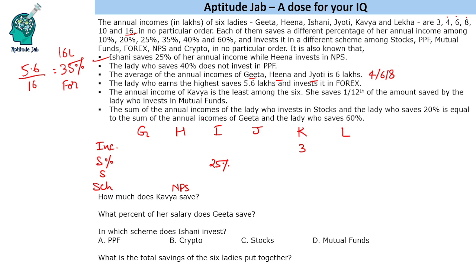Since Gita, Hina, and Jyoti earn 4, 6, or 8 lakhs, none of them is the highest earner. Ishani saves 25%, while the highest earner saves 35%, so Ishani is also not the highest earner. Therefore, Lekha earns 16 lakhs, saves 35% (that is 5.6 lakhs), and invests in forex. The remaining income of 10 lakhs goes to Ishani, who saves 25% — that is 2.5 lakhs.